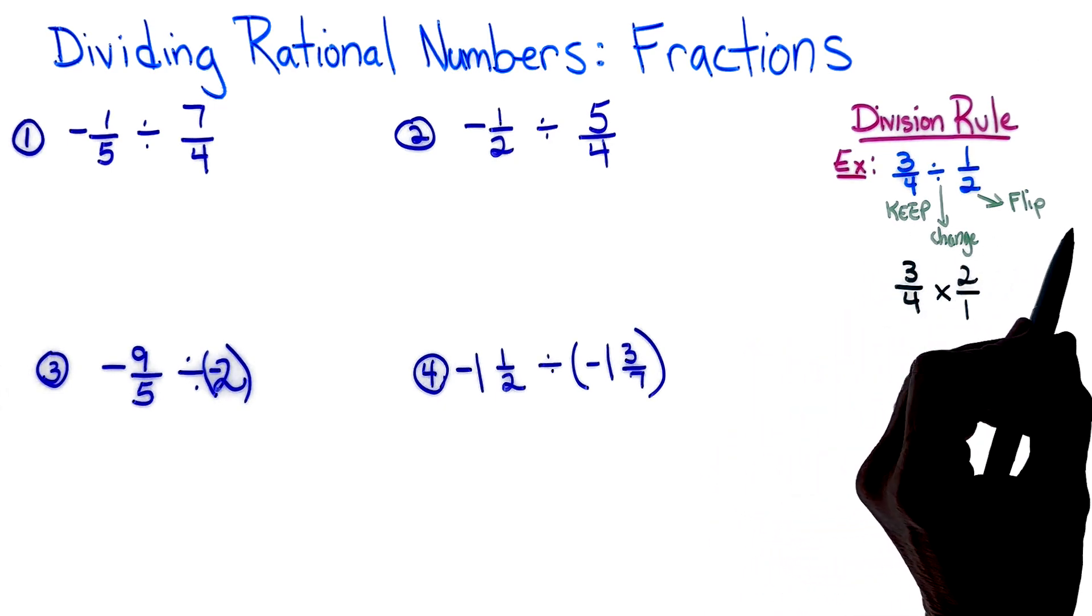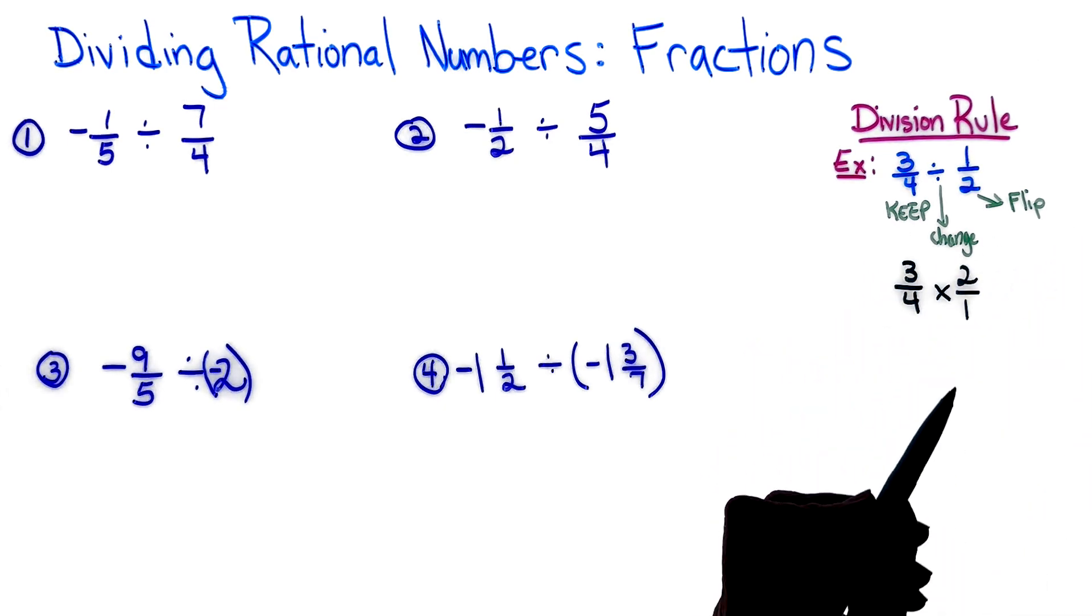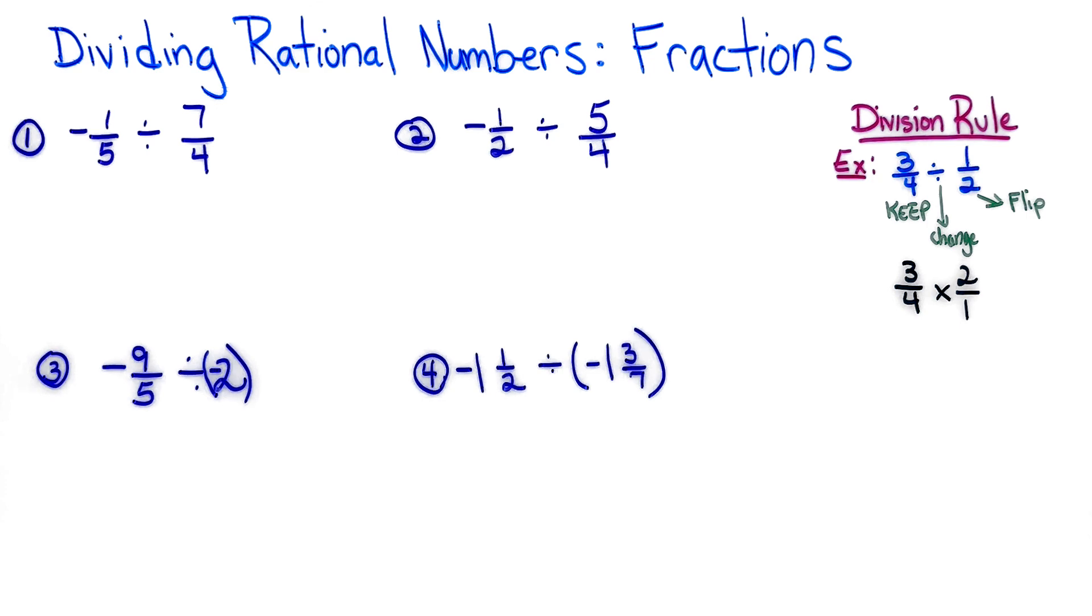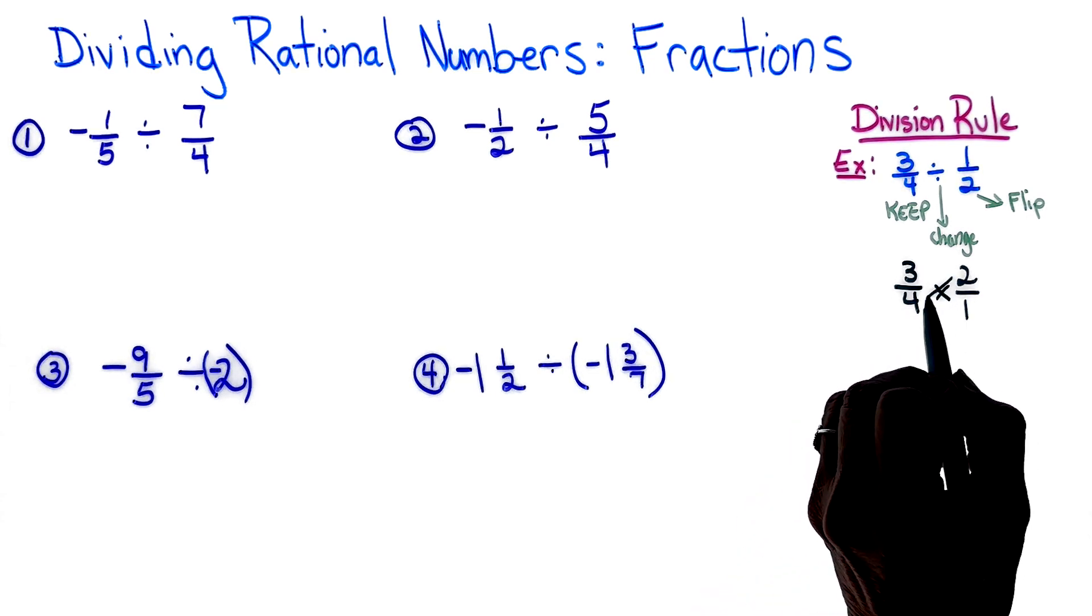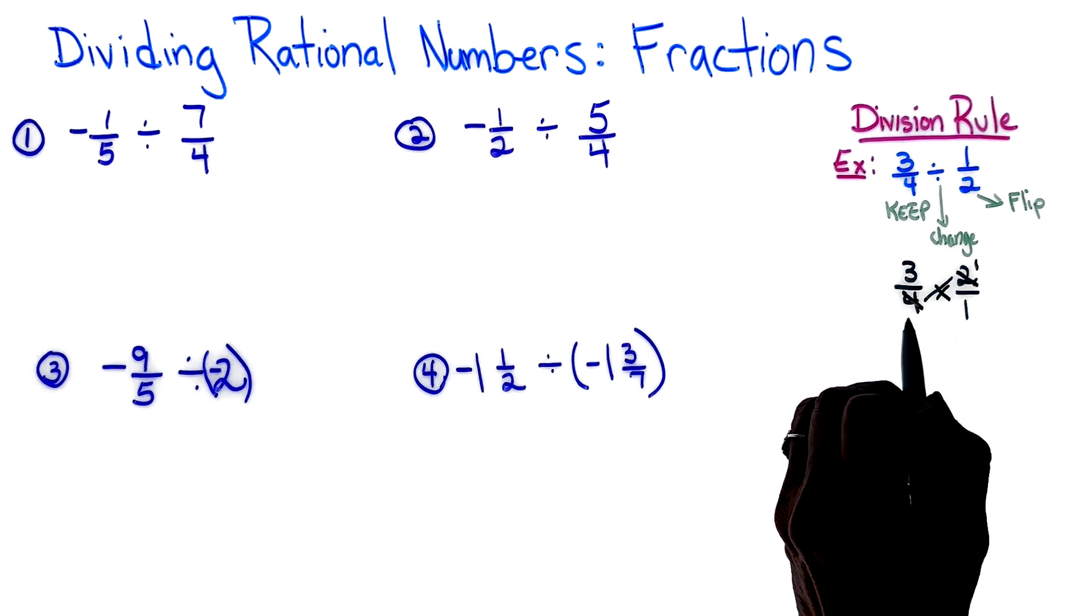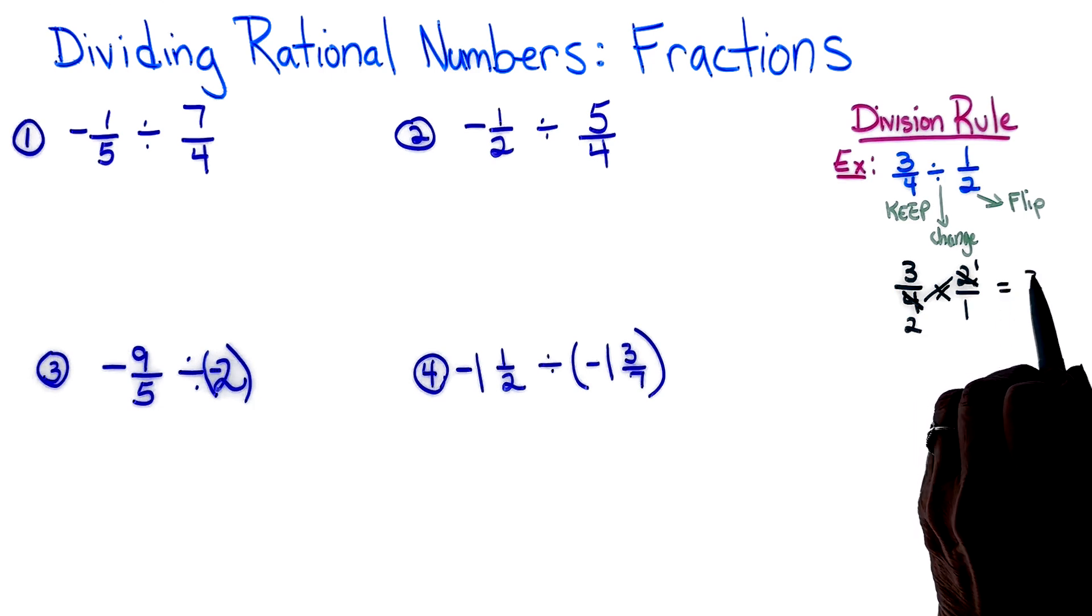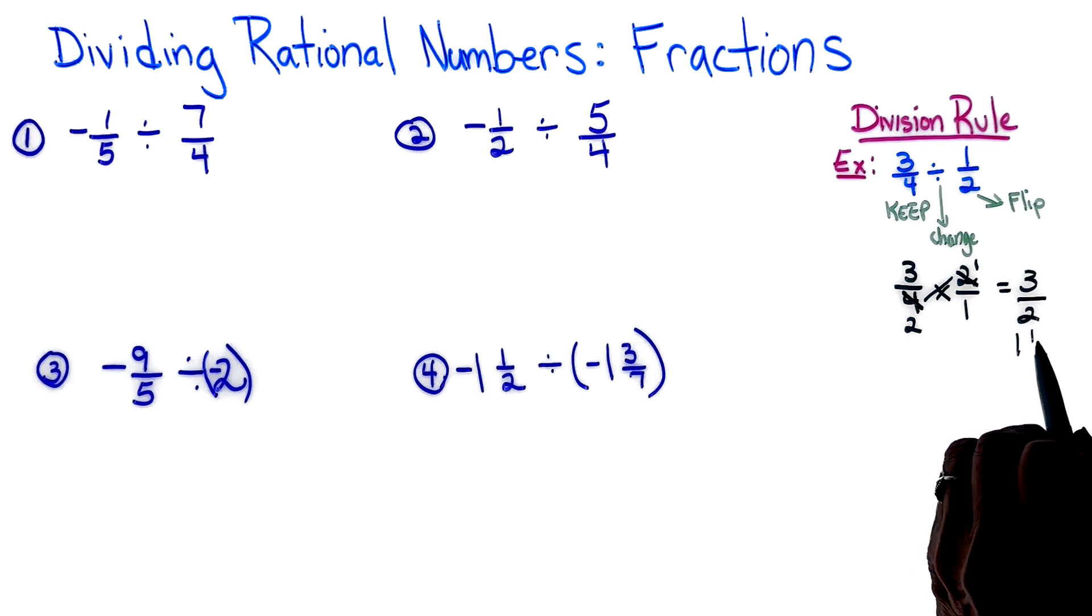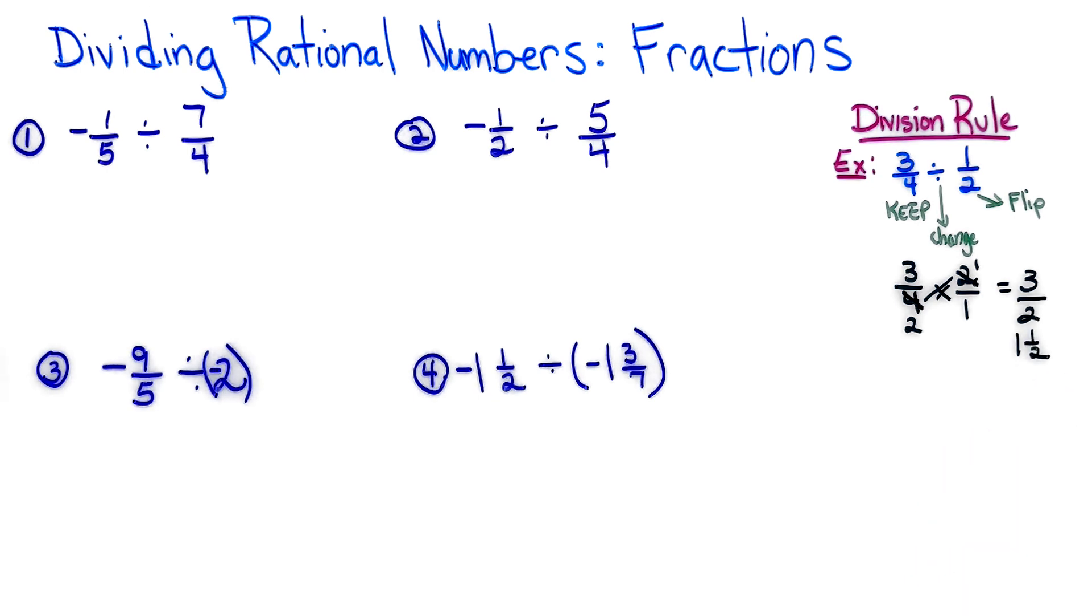And now I see that I can simplify my four and my two. I'm going to divide both of those by two. And three times one is equal to three, two times one is equal to two, and our answer is one and one half.